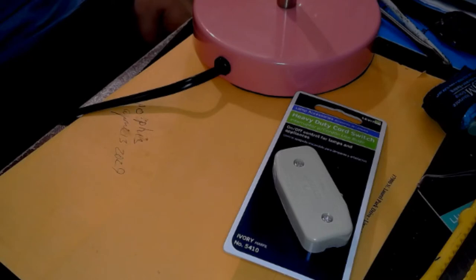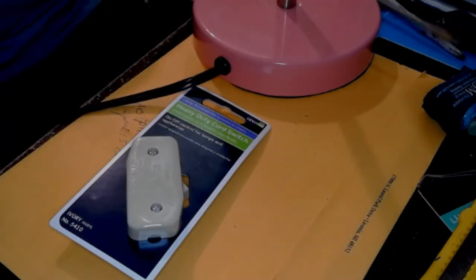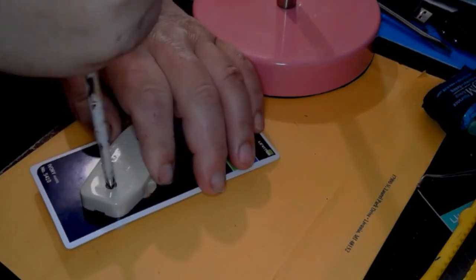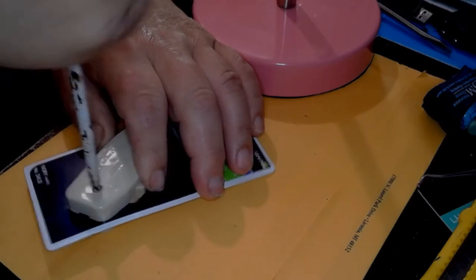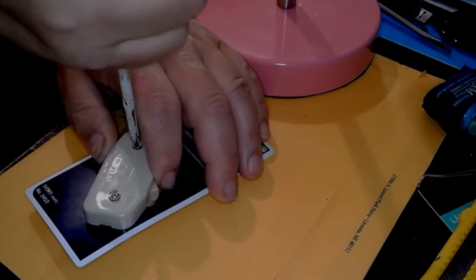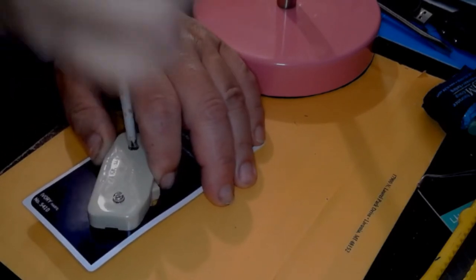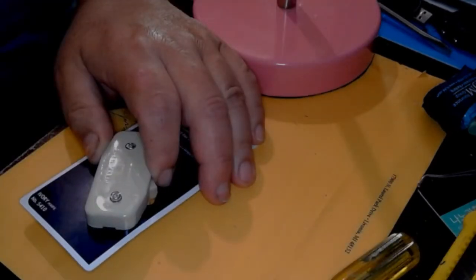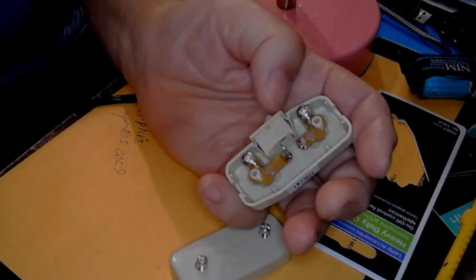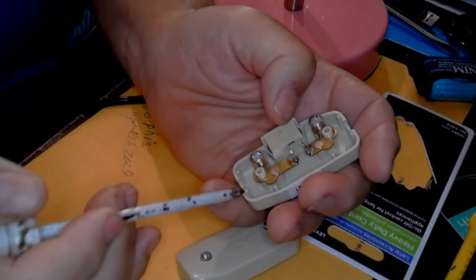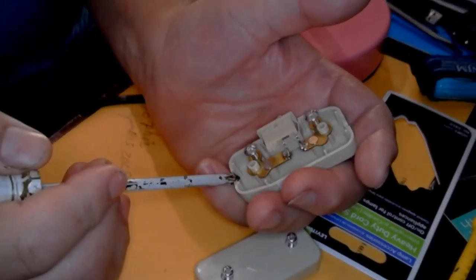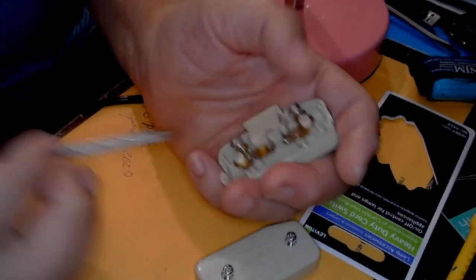So let's first look at it. You're obviously going to need a screwdriver to open it. So let's do that real quick. So I've opened the switch and you can see in here, you have basically two terminals we're going to attach to and the wire comes through here. Now, let's look at the cord.